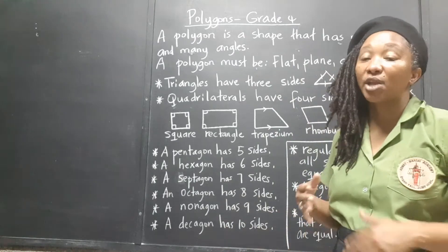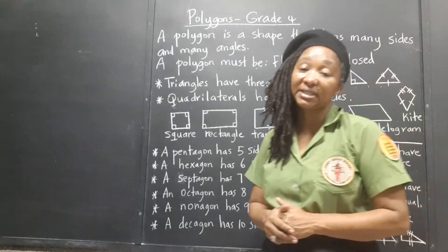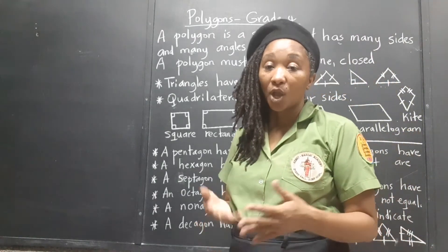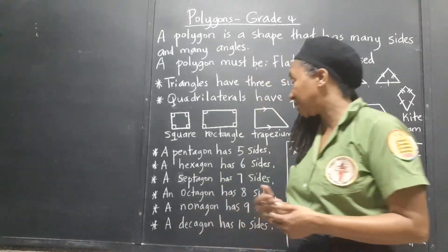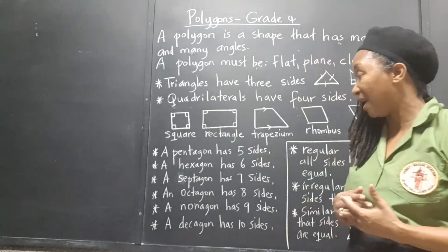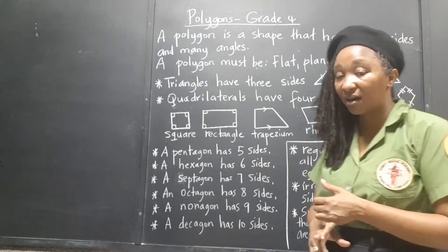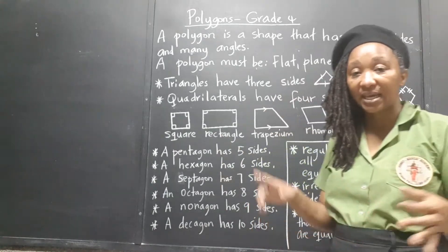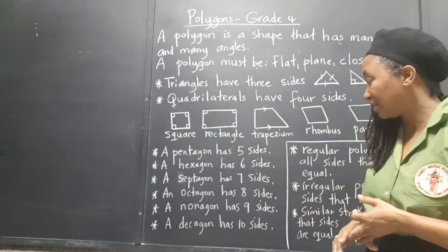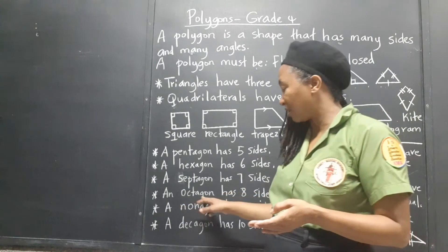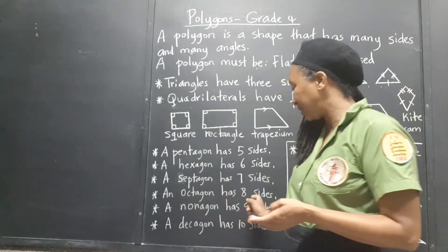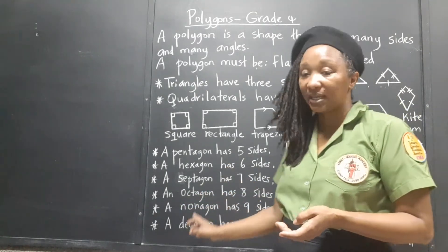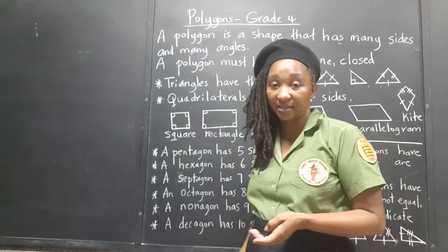Use the prefixes to help you remember how many sides these polygons have: pentagon — five sides; hexagon — six sides; septagon — seven sides; octagon — eight sides; nonagon — nine sides; decagon — ten sides.